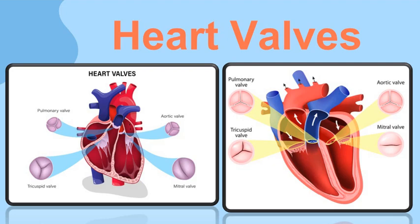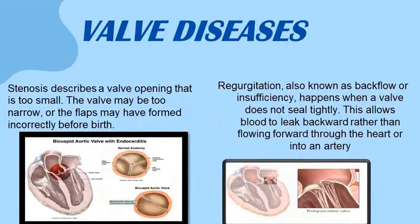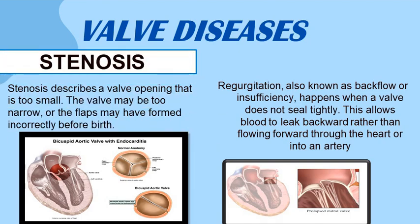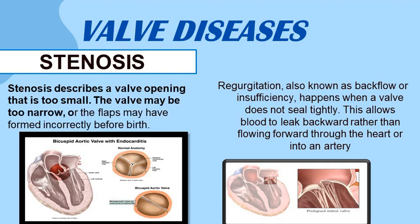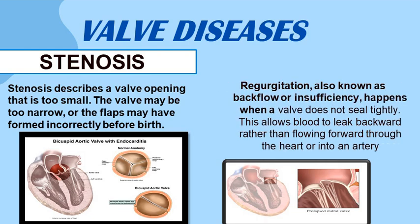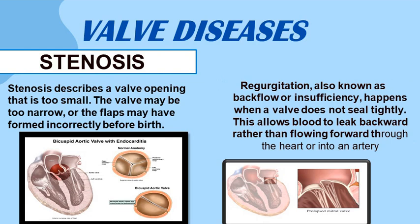Valve problems include stenosis, which happens when a valve does not open wide enough, blocking blood flow, and regurgitation, which occurs when a valve does not close well and becomes leaky, allowing blood to flow in the wrong direction. Stenosis describes a valve opening that is too small. Regurgitation, also known as backflow or insufficiency, happens when a valve does not seal tight.